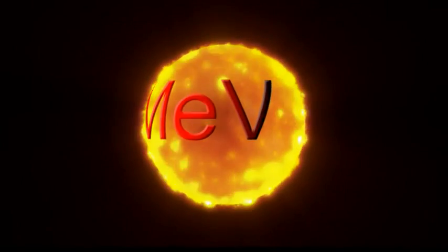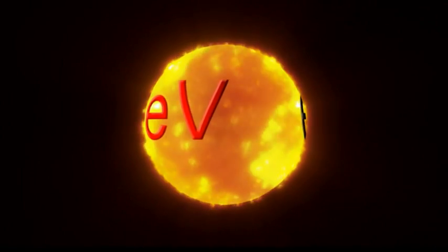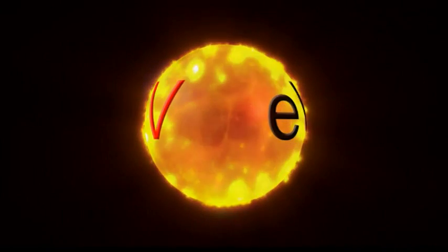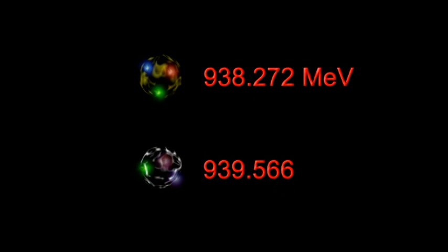Using these units, here are some facts that will come in handy. The rest mass of the proton is 938.272 MeV. The rest mass of the neutron is 939.566 MeV.